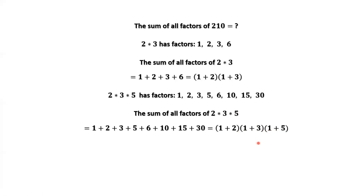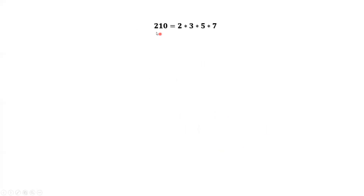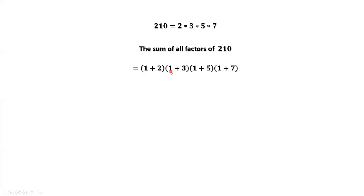From here, we can see a pattern. We can derive the final answer now. The prime factorization of 210 equals 2 times 3 times 5 times 7. The sum of all factors of 210 should be equal to (1 plus 2) times (1 plus 3) times (1 plus 5) times (1 plus 7), which is 576.